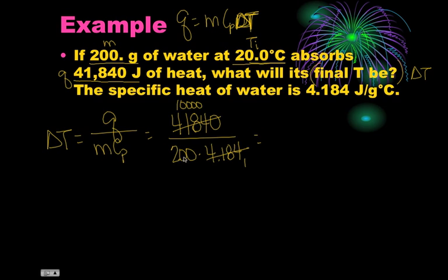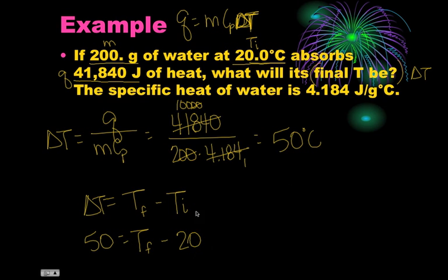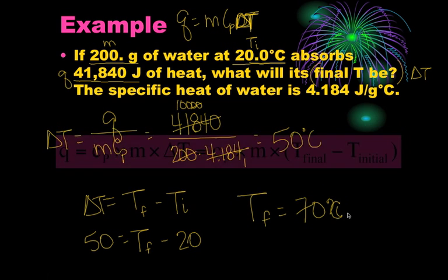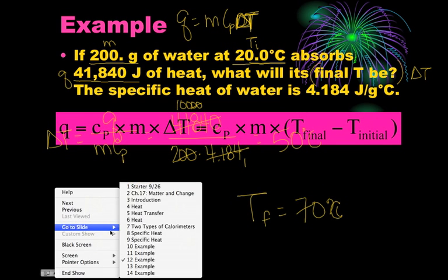You can reduce this out without using a calculator. The 41,840 and the 4.184 - they'll reduce down, this becomes a 1, this becomes 10,000. Then you can cross out zeros - two zeros there, two zeros there - so this just simply becomes 100 divided by 2 or 50 degrees Celsius. Now this is delta T. The question asked what's the final temperature? Well delta T is equal to the final temperature minus the initial temperature. So if delta T was 50, T final is what we're trying to find minus 20, because T initial was 20. So that means the final temperature is 70 degrees Celsius.